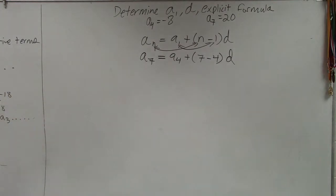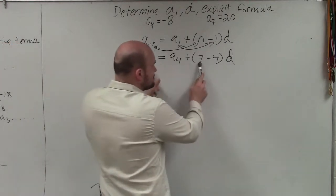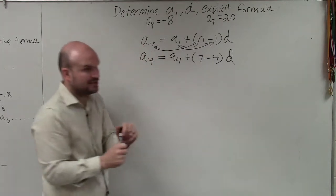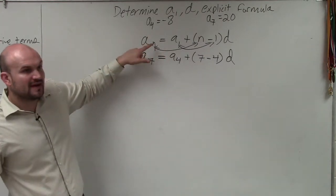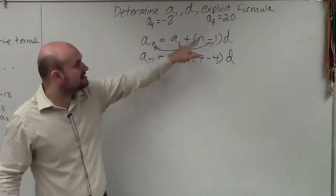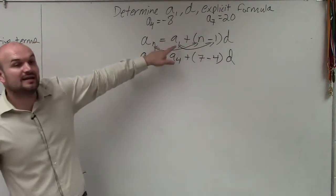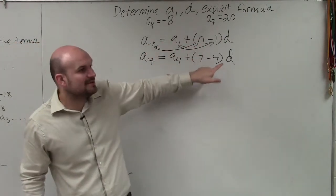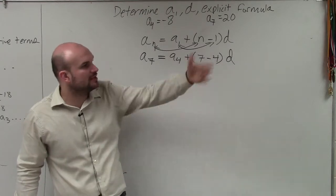Do you guys see what I did? I plugged in the values that I have. I have a to the 7th, I have a to the 4th, but I haven't plugged in those values yet. But I want you guys to understand that the 7's correspond to each other, and the 4's correspond to each other. So if I'm plugging in a number for a to the n, I've got to make sure I plug in 7 in for n. If I'm plugging in a number for a to the 1st, that 1 has to be replaced with a 4.